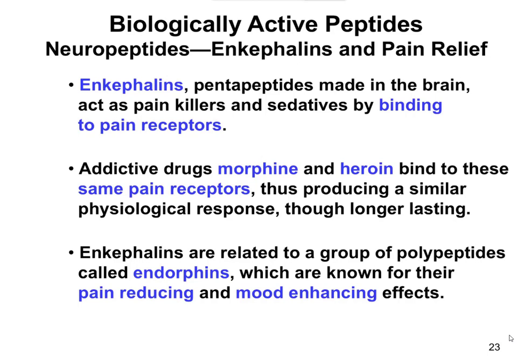Enkephalins are pentapeptides, meaning they have five amino acids. These are made in the brain and they act as natural painkillers and sedatives. The way they work is they bind to what are called nociceptors, or pain receptors, in the brain. Whenever those nociceptors are bound by the enkephalins, those receptors can no longer receive the regular type of pain signal, so by default they block the body's ability to sense pain.